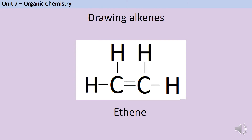As you know, the alkane with two carbon atoms is called ethane, so you can think of 'eth' as meaning two carbons, and therefore this alkene is called ethene. Methene doesn't exist because it wouldn't be possible for one carbon atom on its own to make a double bond.